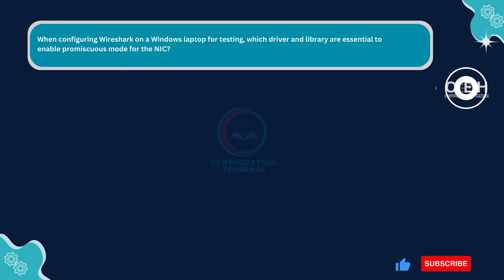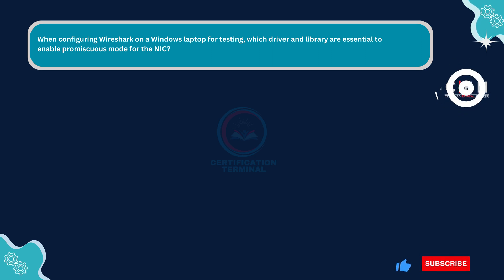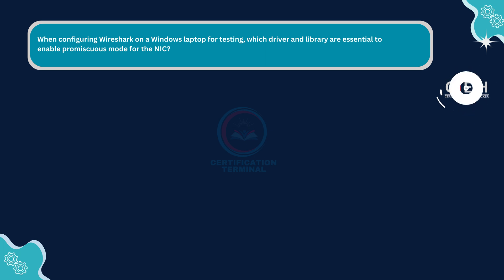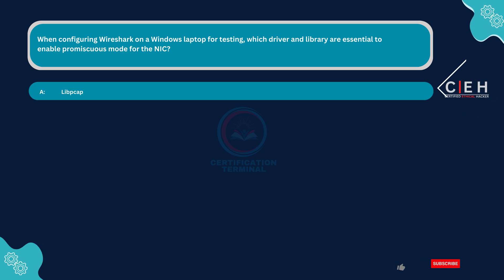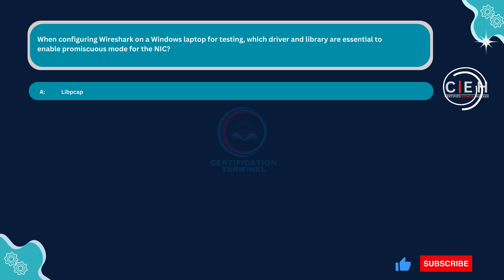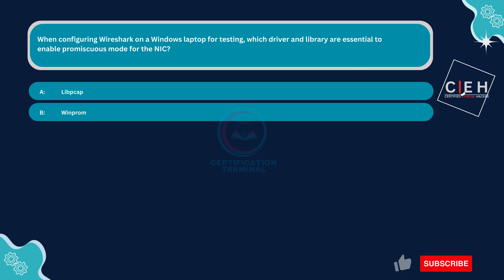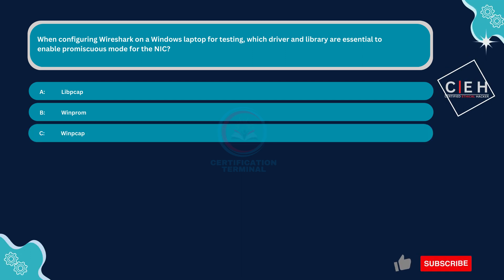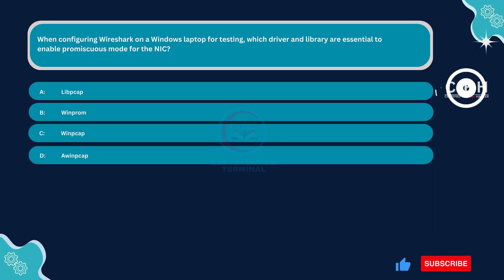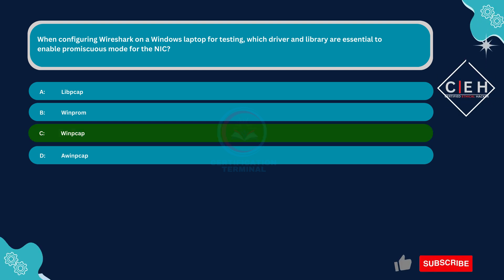Next question. When configuring Wireshark on a Windows laptop for testing, which driver and library are essential to enable promiscuous mode for the NIC? Option A: libpcap. Option B: winprom. Option C: winpcap. Option D: awinpcap. The correct answer is Option C: winpcap.